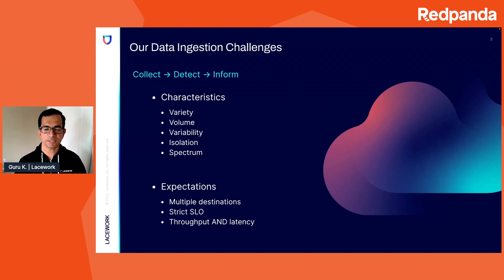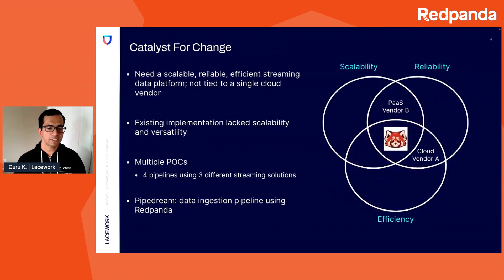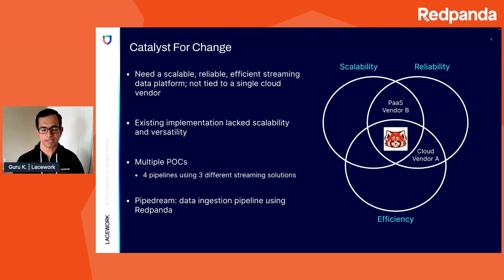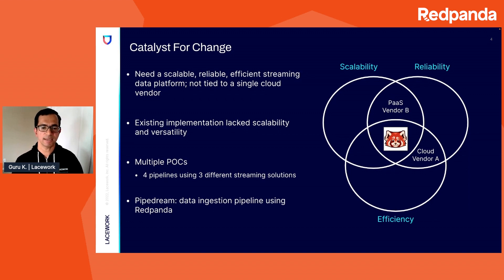It needs to meet the most stringent SLO in order to ensure security efficacy for our customers. To compound everything further, we also need to optimize for both throughput and latency. To deliver all these expectations while handling the challenges, we need a scalable, reliable, and efficient streaming data platform that acts as a hub of data exchange between different analytical components and microservices at Lacework. Most importantly, it needs to provide us the freedom by not locking us to a single cloud vendor.